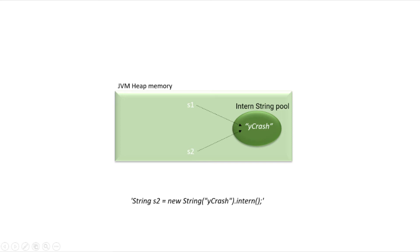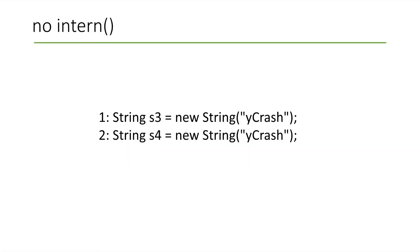Now let's see what will happen to the code if you're not going to invoke the intern operation. Here I say string s3 equals new String 'ycrash' — this is a separate new program. And then I'm saying s4 equals new String 'ycrash'. So I have written a code like this.